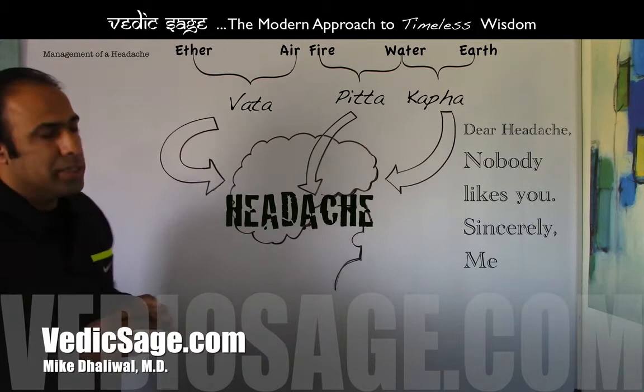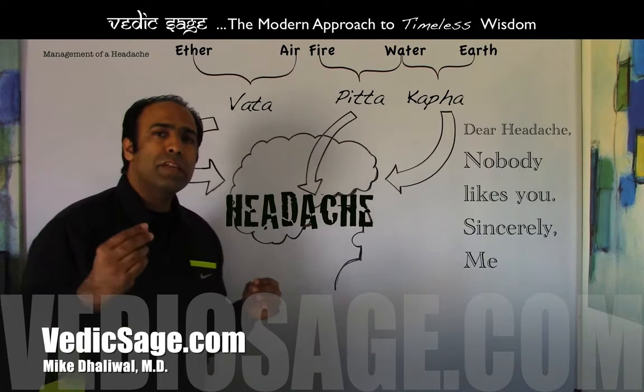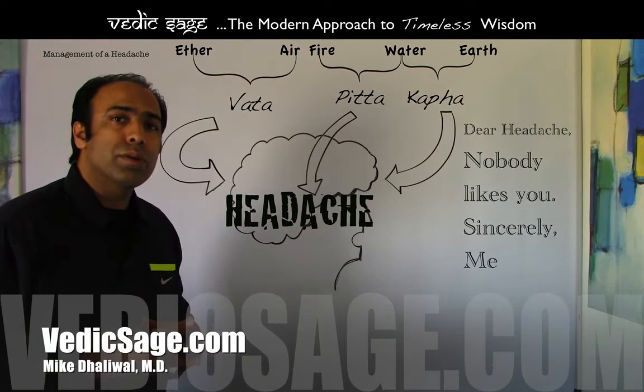All of these herbs will help to stabilize that vata dosha and help to prevent a headache from reoccurring. Likewise, just to stabilize that vata dosha, you may want to consider one teaspoon of haritaki one hour before bed taken with warm water, and this will help to keep the vata dosha stabilized. And finally, you would want to consider a neck or shoulder massage with mahanarayana oil, which is specific for vata dosha.